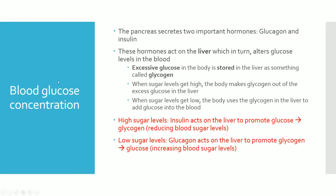The pancreas secretes two important hormones for this function: glucagon and insulin, which have opposite functions. Both glucagon and insulin act on the liver, which in turn alters glucose levels in the blood. The liver is where excess glucose is stored — when we have too much glucose, the extra is stored in the liver as glycogen.